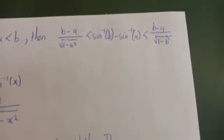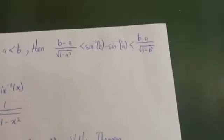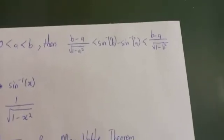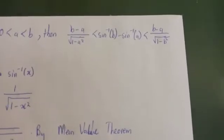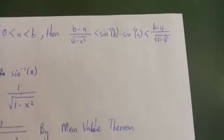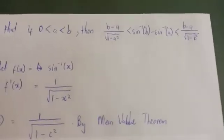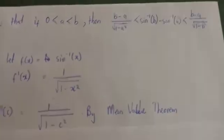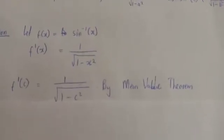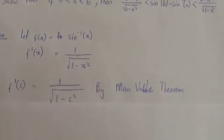Looking at the question, we can see that the expression involves the arcsin function. So we let f(x) = arcsin(x), and when we differentiate, we get f'(x) = 1/√(1−x²).